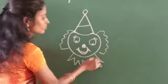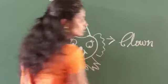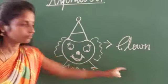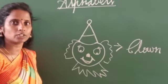This is clown. This is clown. Next we go to alphabet B, okay.